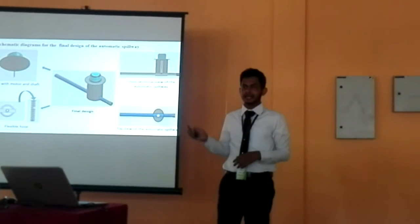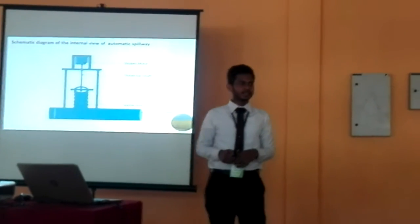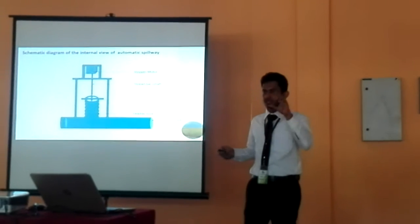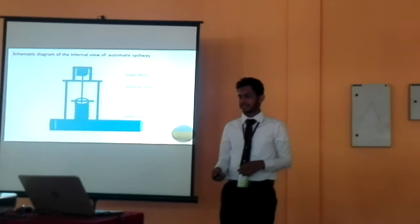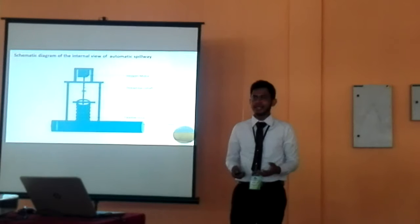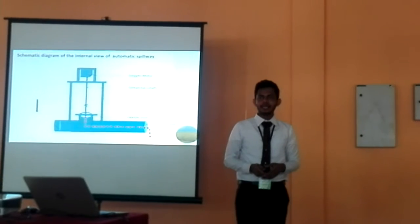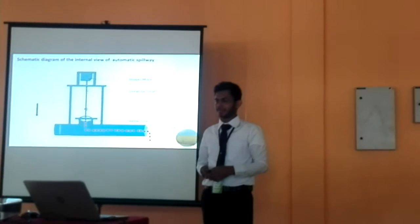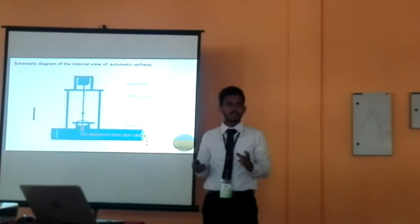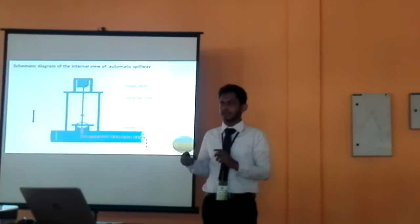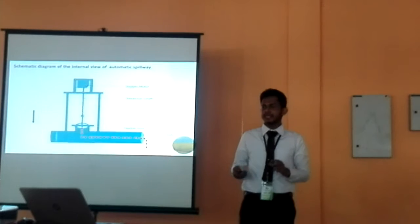Here is the cross-sectional view, top view, and internal schematic of the automatic spillway. The flexible hose moves upward or downward according to the stepper motor's rotation. If the stepper motor rotates clockwise, the flexible hose rises up; if it rotates anticlockwise, the flexible hose lowers down. With this mechanism, the water level can be maintained at a specific height for different crop growth stages. Water sealing is also very easy with this mechanism.